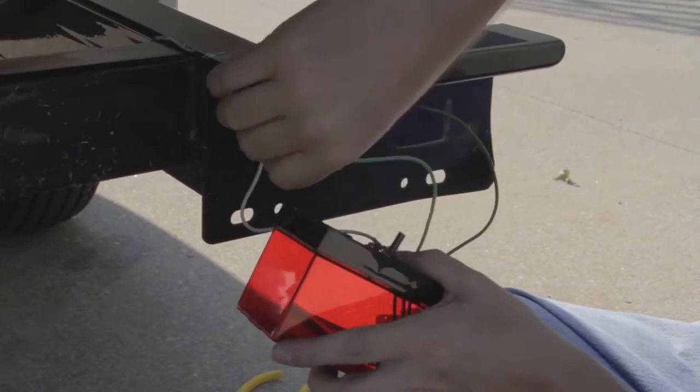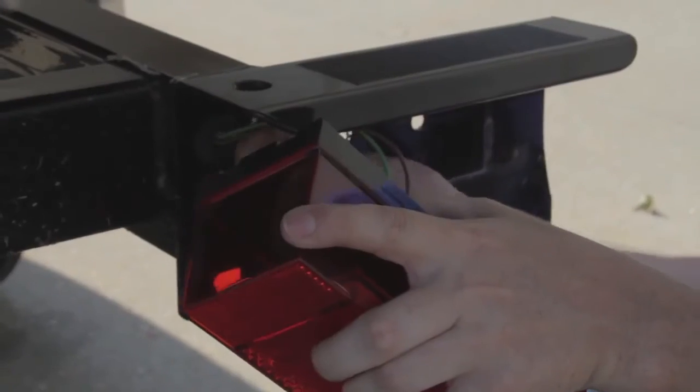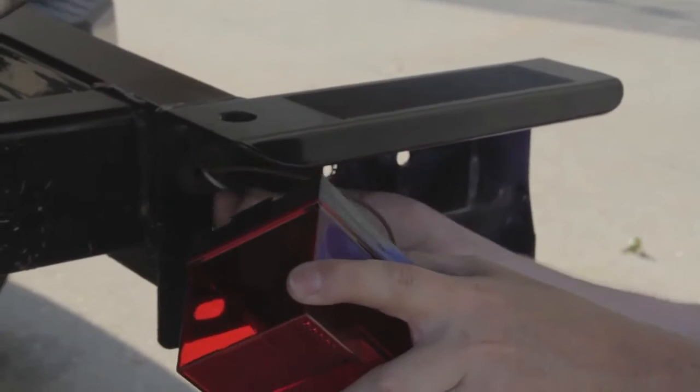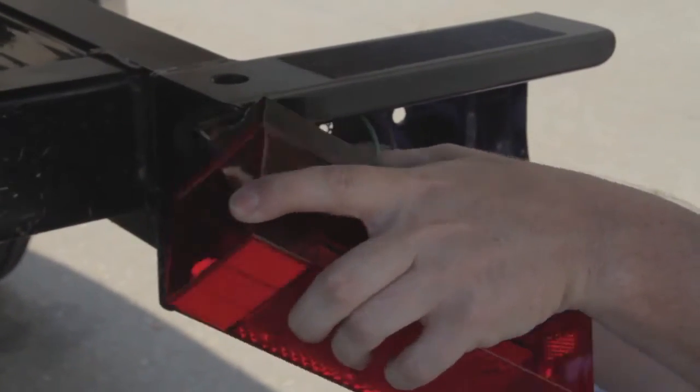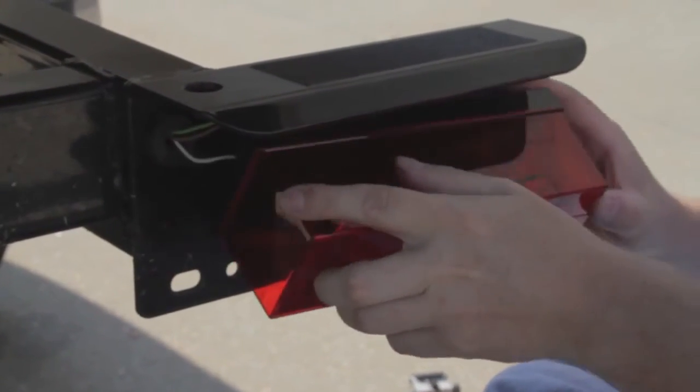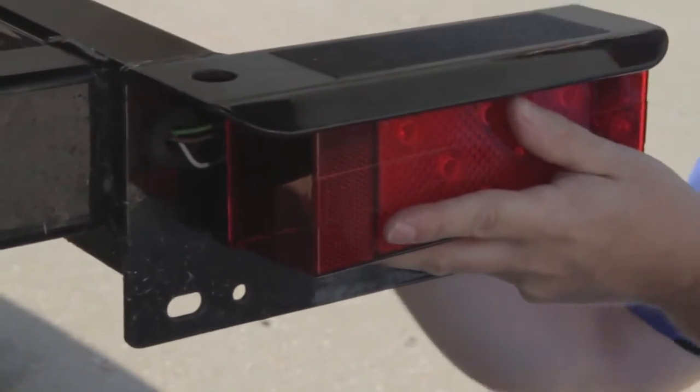After you've wired each light, attach the light to the trailer according to the specific unit's specifications, ensuring that any removable lenses or accessories are secure. Ensure that the wiring is secure, it is not pinched down between the light and the trailer, and can't catch on any moving parts or get snagged by road debris.